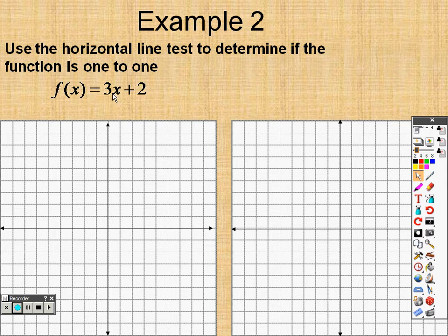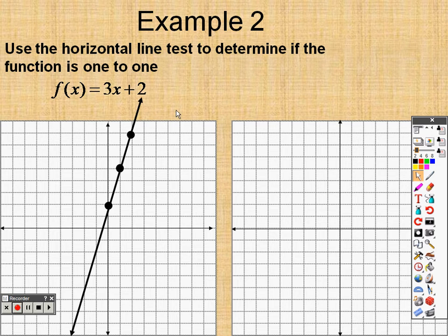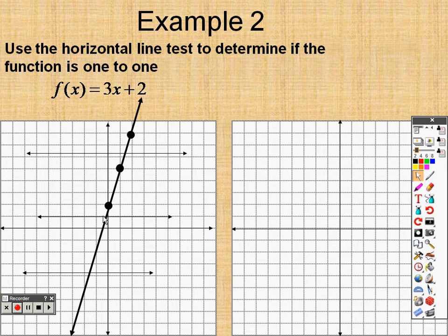According to this graph, that means I go up two and put a point, because that's my Y-intercept, and now I go up one, two, three, and over one, up one, two, three, and over one, and put a point there, and I draw a line. According to the horizontal line test, if I draw a horizontal line through it and it only touches it at one point, it's one-to-one. Well, look, it touches at one point, touches at one point, touches at one point. So that would state, according to that rule, that it is one-to-one. That is a one-to-one function, as we knew from before.